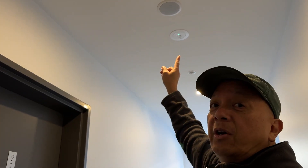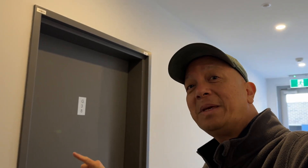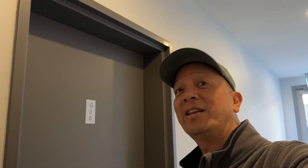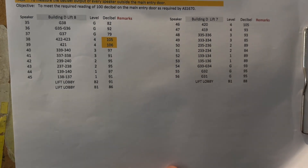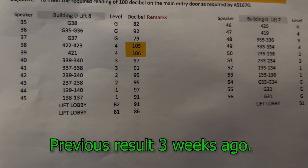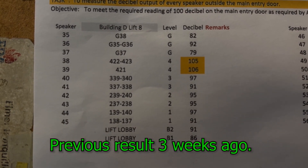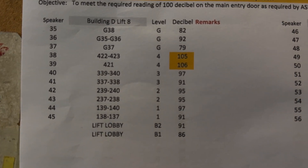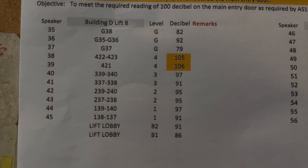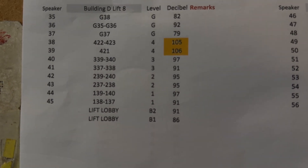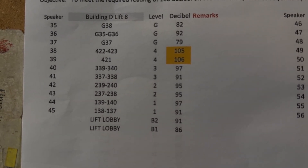Here's an example: there's your speaker and there's a door — we must meet 100 decibel just here. If we don't meet that, it's a fail, it's not compliant. So this is the result of my previous testing. You'll notice speakers 35 and 36 have a decibel reading of 82 and 92. But on level 4, we have 105 and 106.